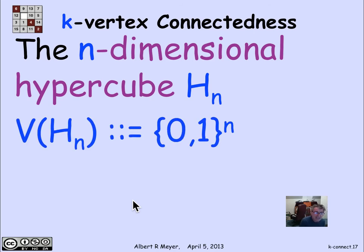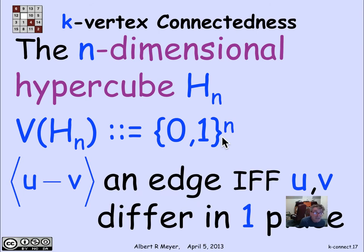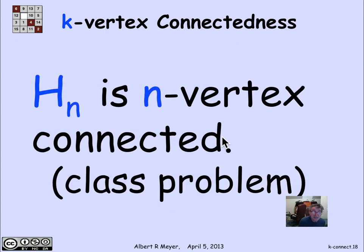In general, the way we define H_n is that its vertices are the binary strings of length n, and two vertices are adjacent if they differ in one bit. They're the same except that in one coordinate, one of them has a 1 and the other has a 0. In that case, you can make the edges adjacent. It turns out that the n-dimensional hypergraph is n-vertex connected, and this is worked out in a homework or class problem.